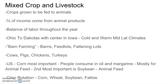Corn is the most important crop in mixed crop and livestock. People consume some of it as oil and margarine, but most corn grown is for animal feed — corn-fed meat. This is mainly a United States phenomenon; much of the rest of the world is grass-fed. The US has so much corn produced that it needs an outlet, and corn also tends to sweeten up the meat.